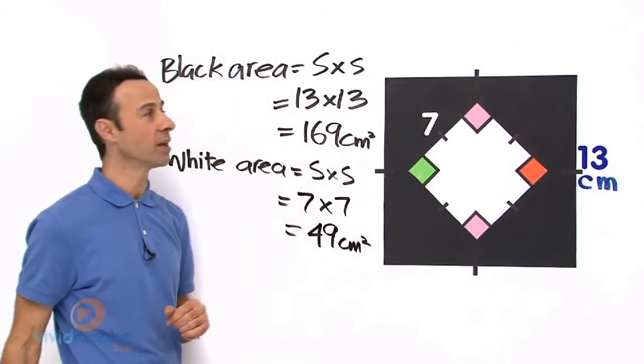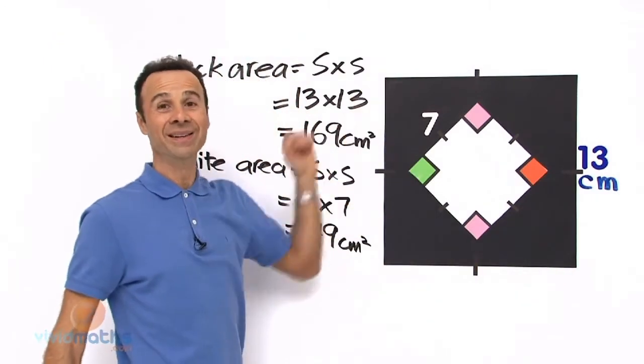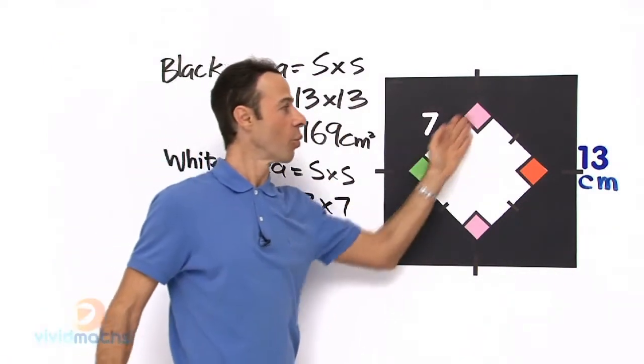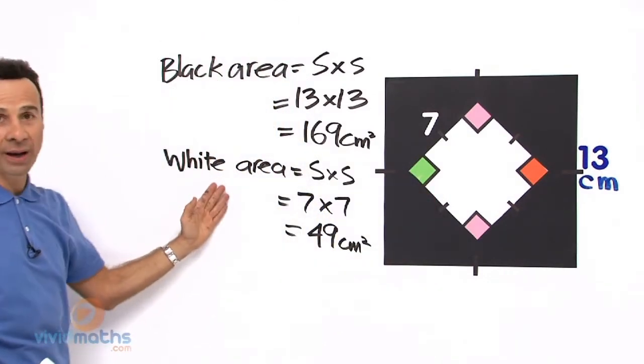Now all we have to do is the black area, the large black area, the black square, take away the white square embedded within it. So that is going to be black area minus white area.